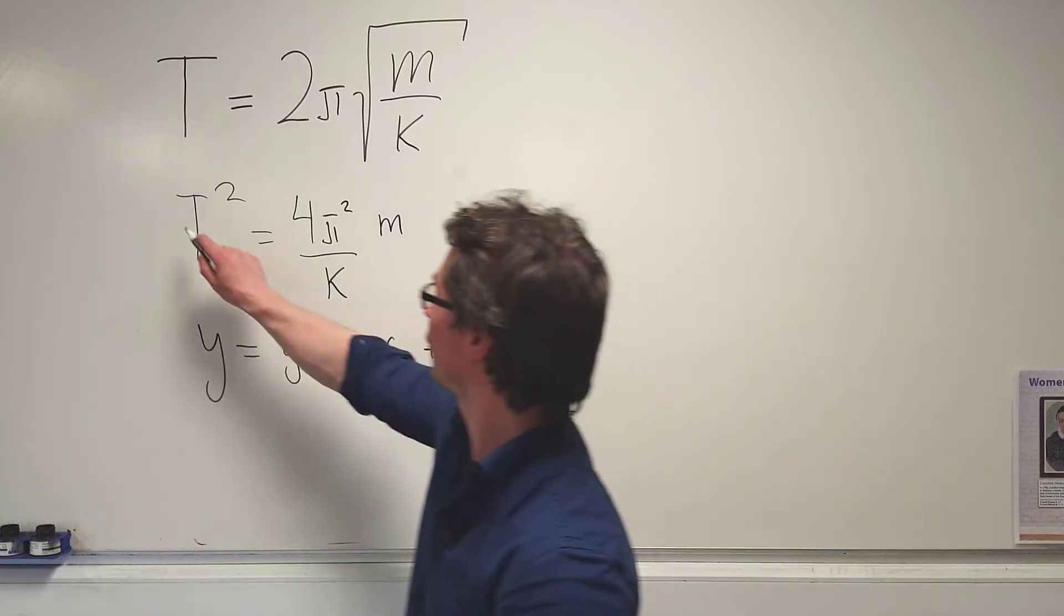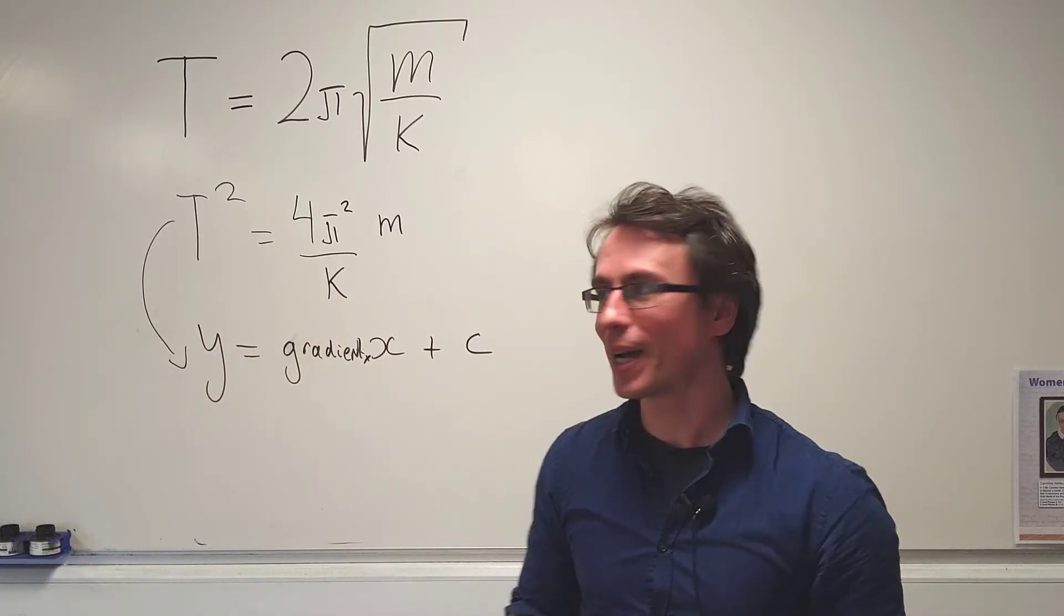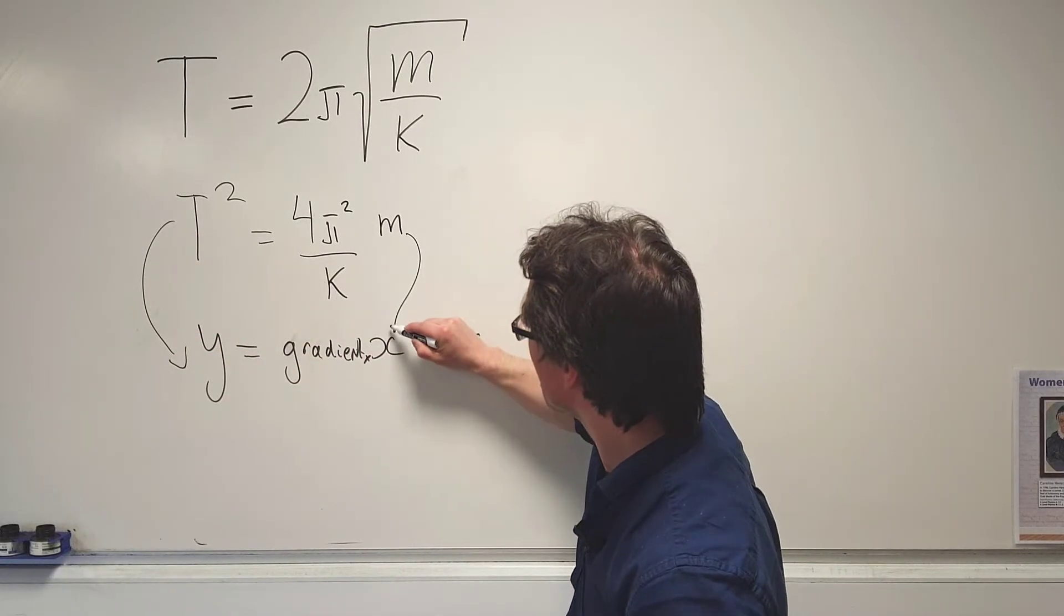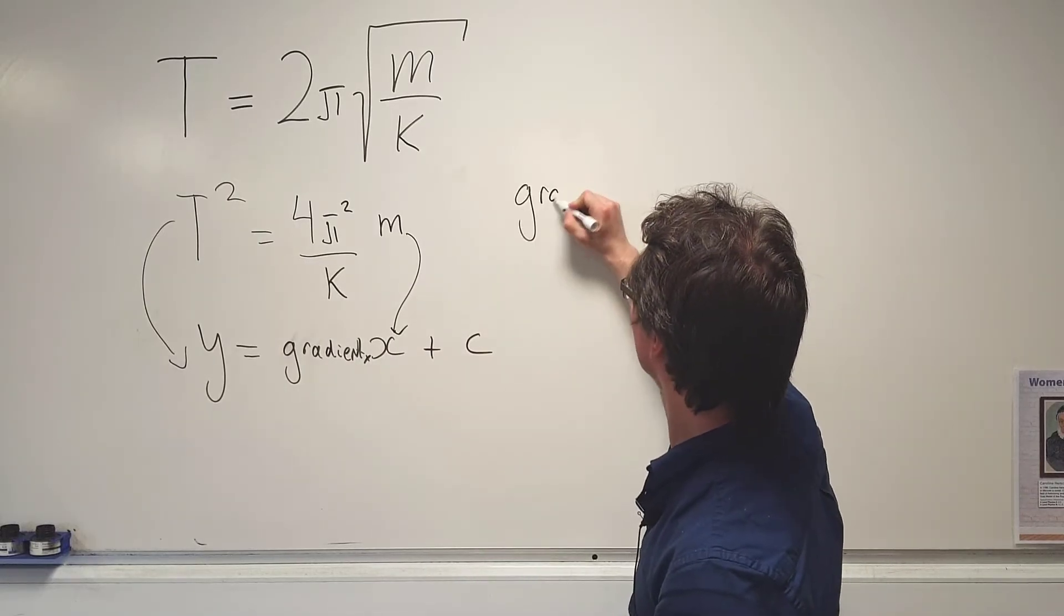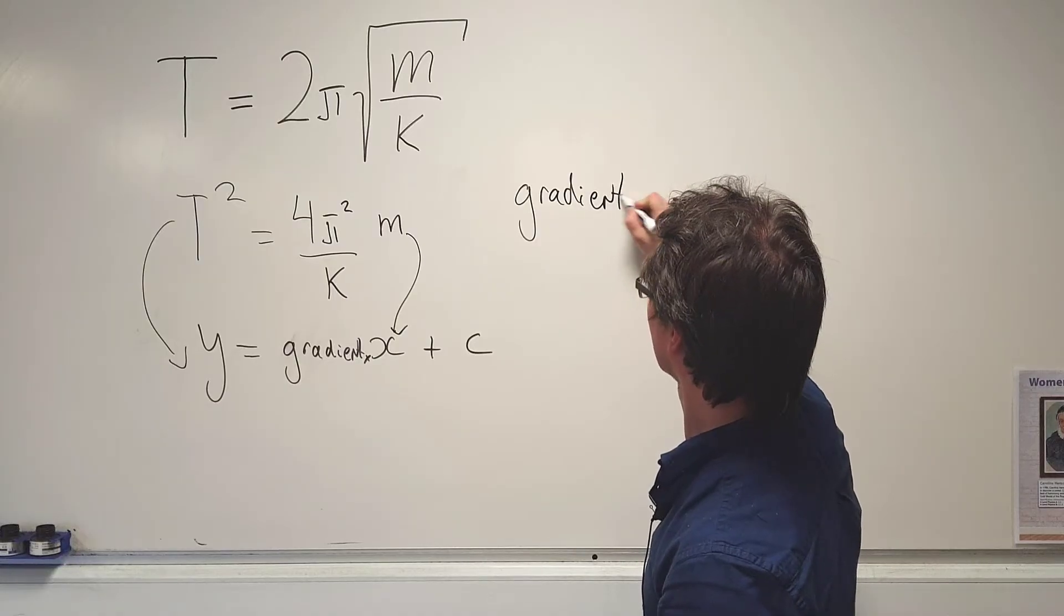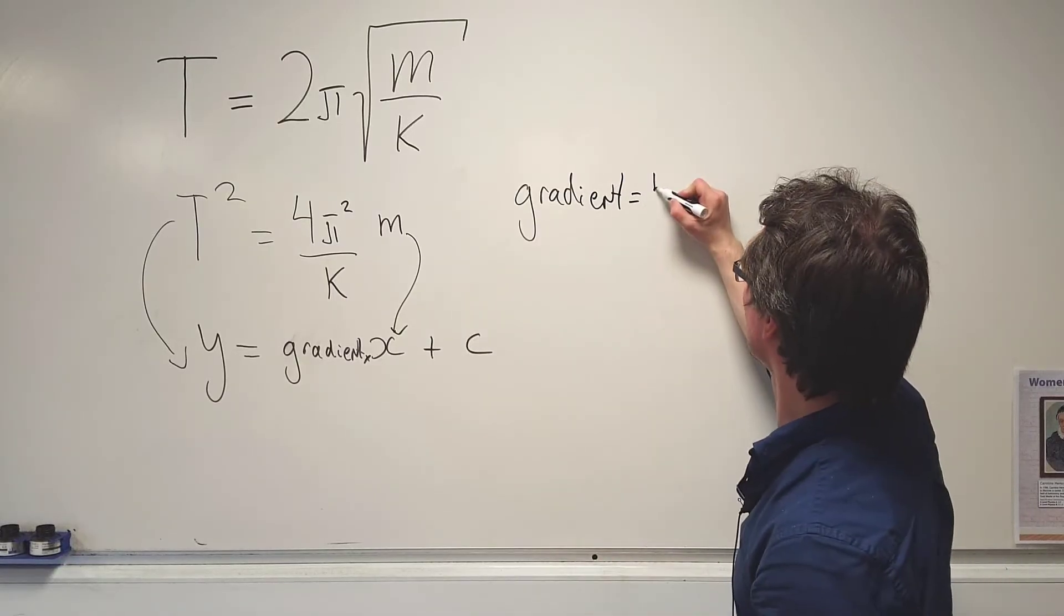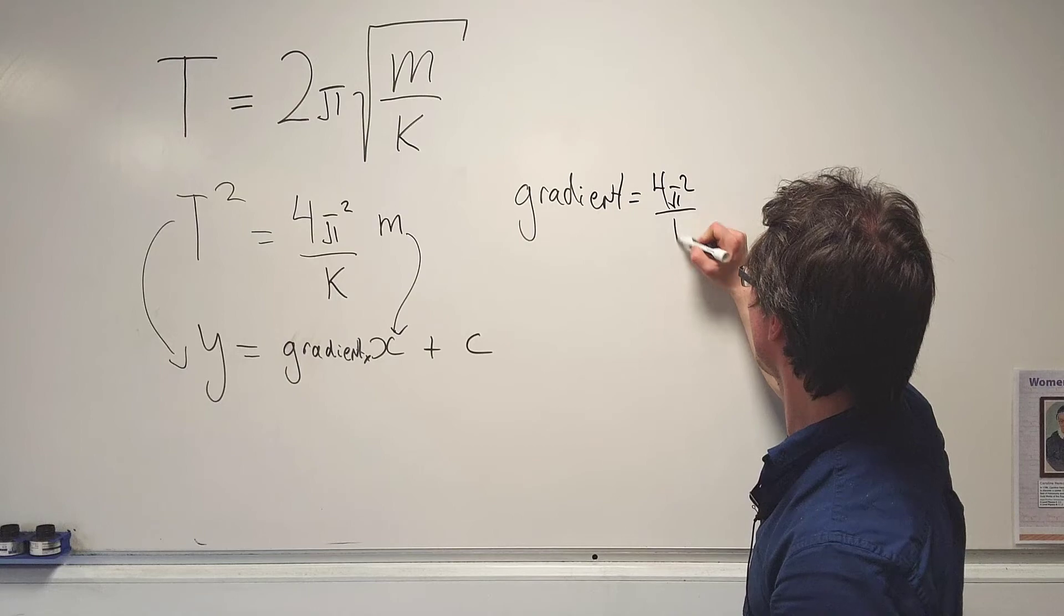And if we plot a graph of T² on the y-axis against m on the x-axis, we're going to see that our gradient will just be equal to 4π² over k.